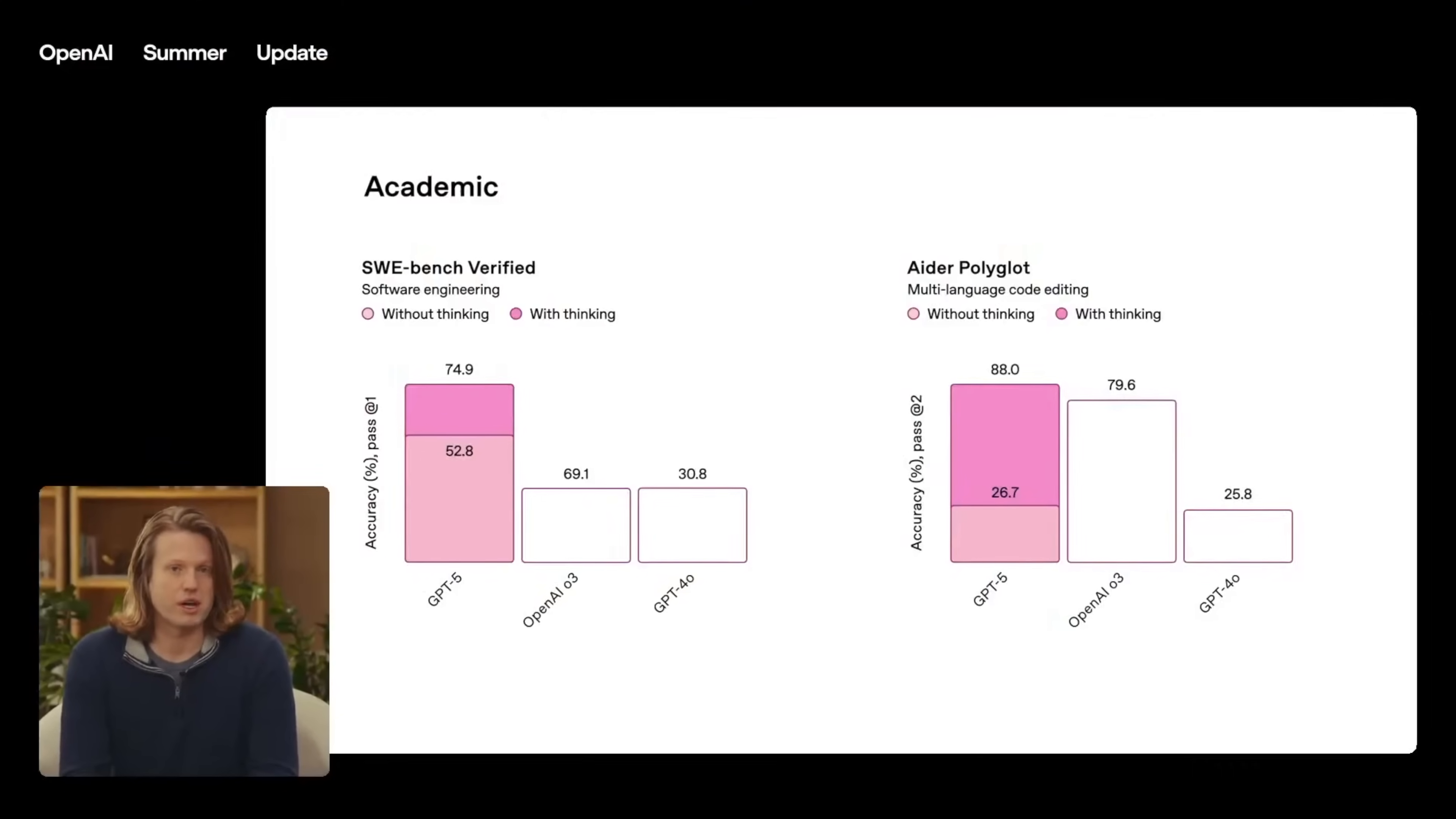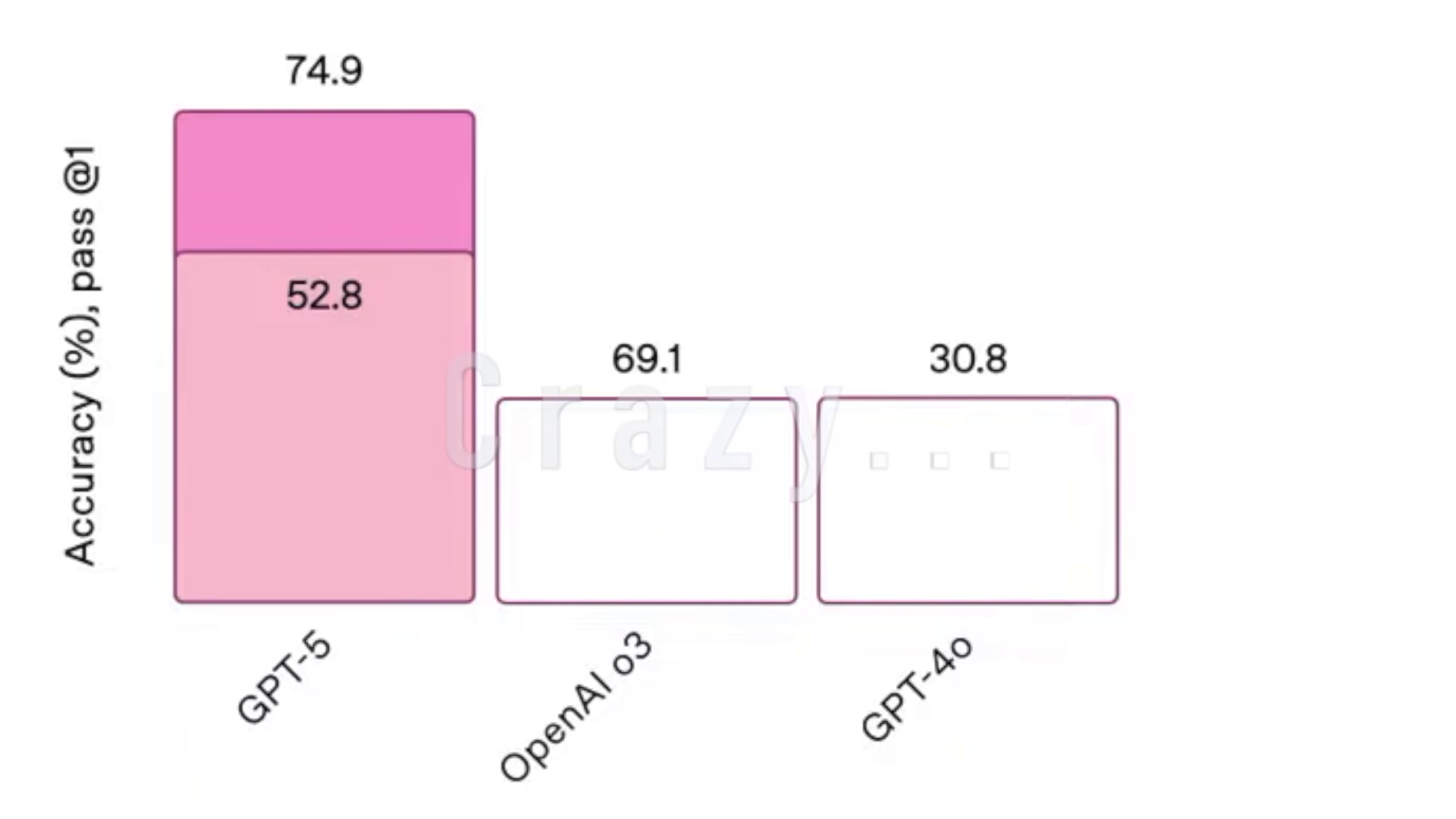All right, have OpenAI just fumbled the launch of GPT-5? Have you seen these graphs? Look at it. What is going on? This is crazy.